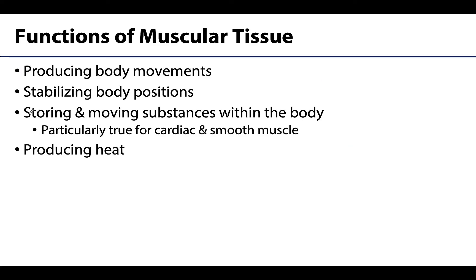There are four main functions of muscle enabled by those properties. The first is producing body movements — not just obvious ones like walking or running, but also talking, urination, and many more functions involving movement. A second function is stabilizing body position, which involves skeletal muscle in particular. We'll talk quite a bit about postural muscles, which contract continuously to allow for standing or sitting upright, playing a big role in stabilizing body positions.